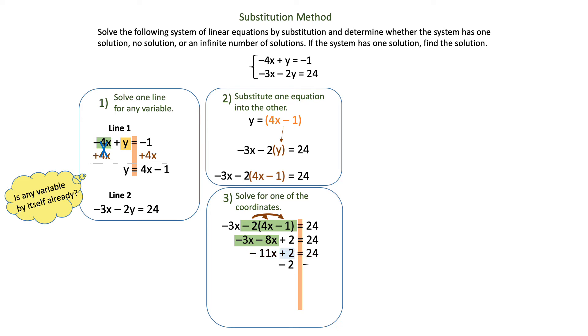Then I'm going to determine that I need to subtract 2 on both sides. That's going to give me negative 11x is equal to 22, because 24 minus 2 is 22.